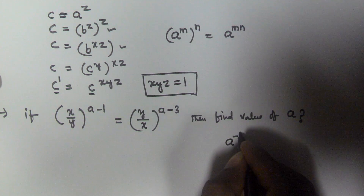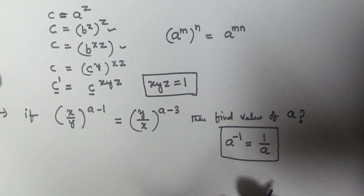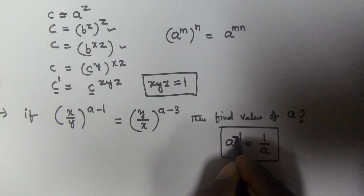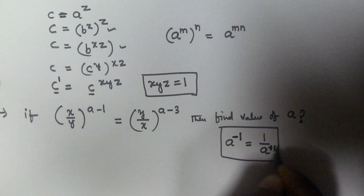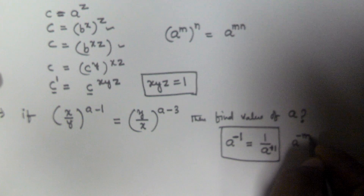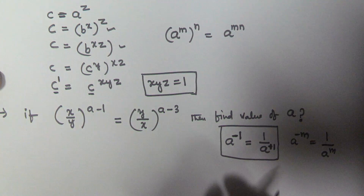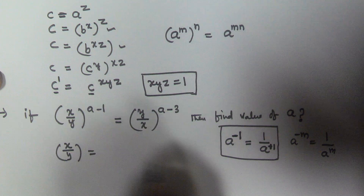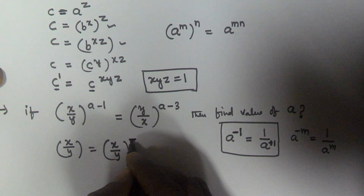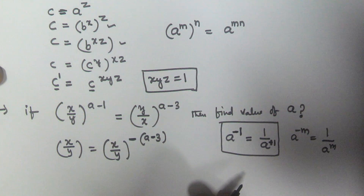We have a formula: a to the power of minus 1 equals 1 by a. So a to the power of minus m equals 1 by a to the power of m, meaning the numerator becomes denominator and vice versa, and the power is multiplied by minus 1. In the same manner, y/x can be converted into x/y by using a negative exponent before the exponent.